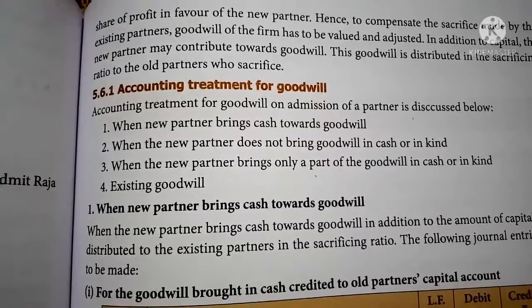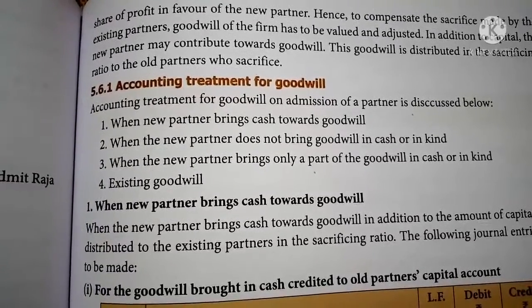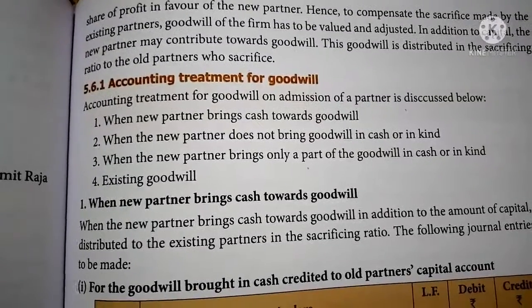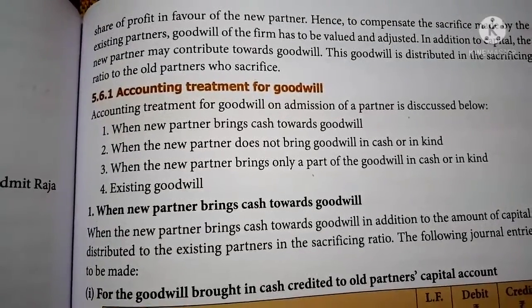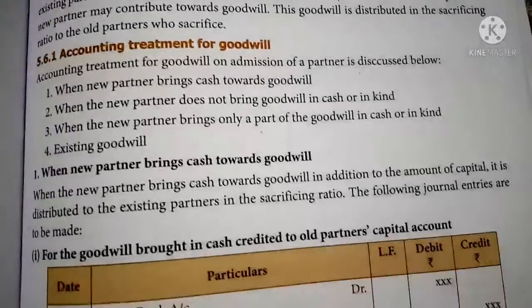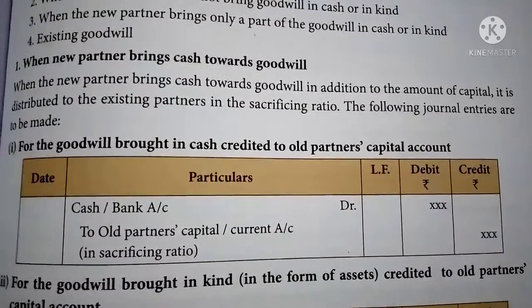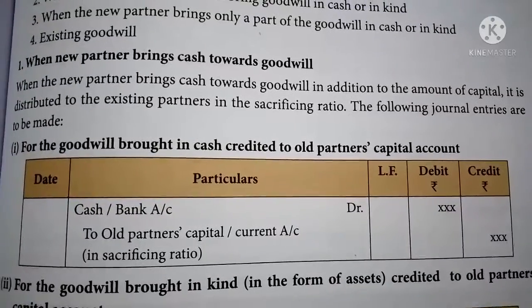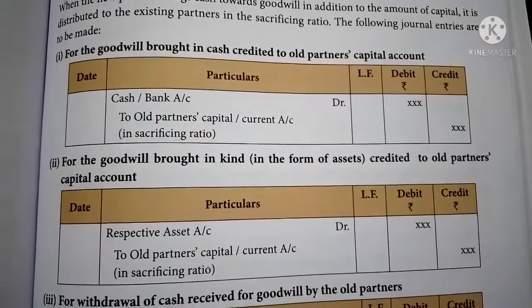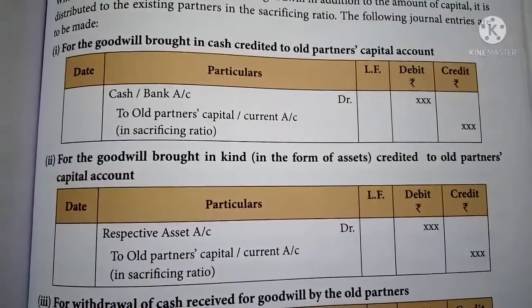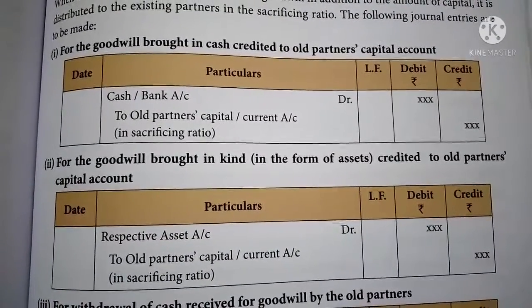There are four ways to treat goodwill at the time of admission of a new partner: when the new partner brings cash towards goodwill; when the new partner does not bring any cash or in kind for goodwill; when the new partner brings only a part of the goodwill in cash or in kind; and existing goodwill. When the new partner brings cash towards goodwill, the entry is: cash or bank account to old partners' capital account or current account. For goodwill brought in kind, the entry is: respective asset account to old partners' capital account or current account.